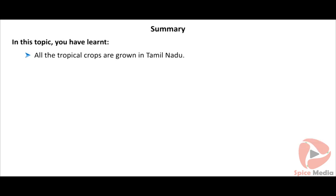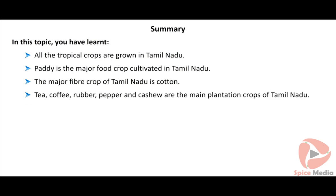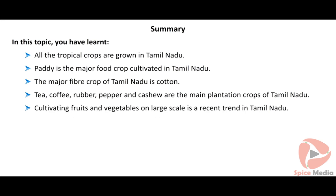In summary, all tropical crops are grown in Tamil Nadu. Paddy is the major food crop; cotton is the major fiber crop. Tea, coffee, rubber, pepper, and cashew are the main plantation crops. Cultivating fruits and vegetables on a large scale is a recent trend in Tamil Nadu.